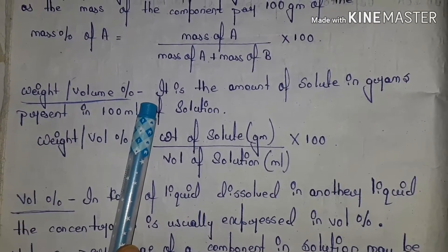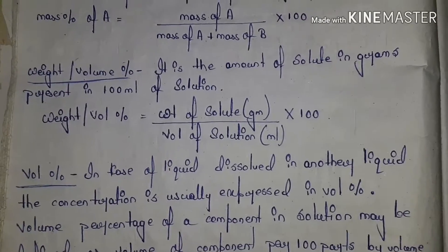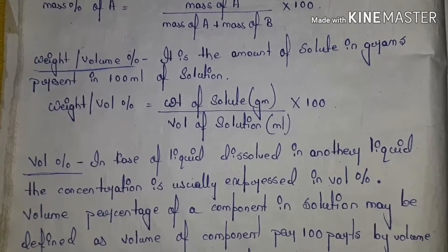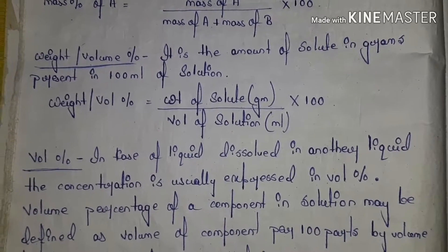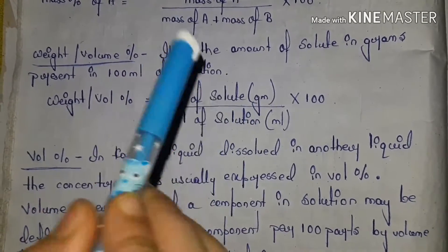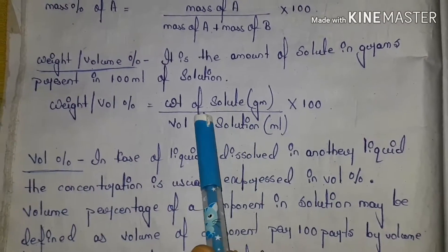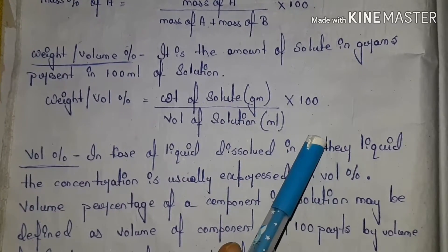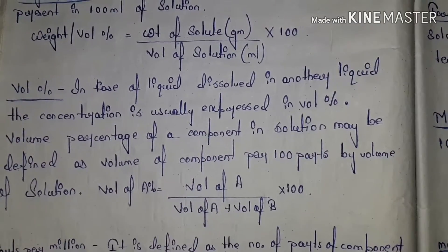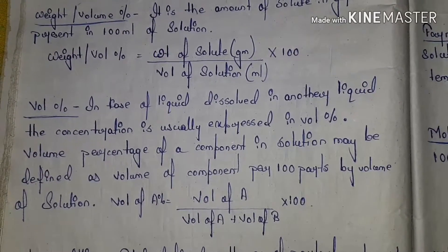Weight by volume percentage: it is the amount of solute in grams present in 100 ml of solution. Weight by volume percentage compares weight of solute by volume of solution — weight of solute is taken in grams, volume of solution in milliliters, multiplied by 100. If solute is given in kg, convert volume of solution to liters; if in milliliters, convert to grams. Please take care of units while solving numericals.